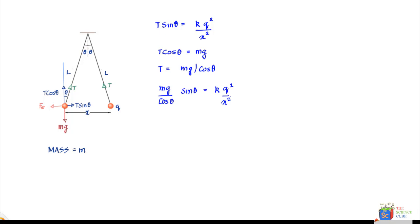If you simplify this further, this becomes mg tan theta equals k q square upon x square. Now we can also say that tan theta equals opposite side, and opposite side here would be x upon 2.